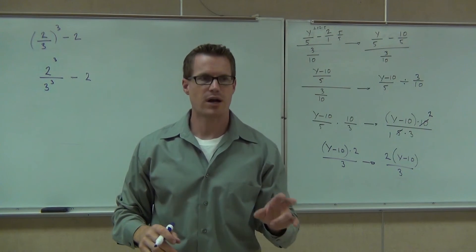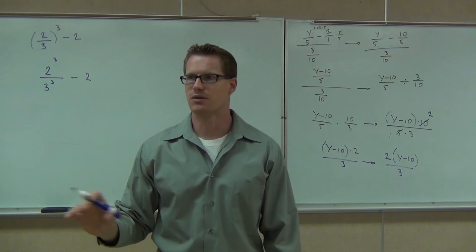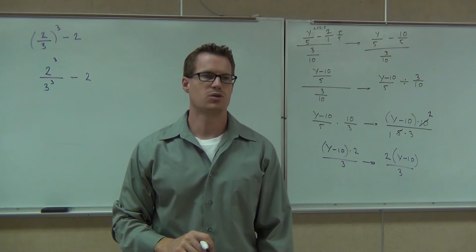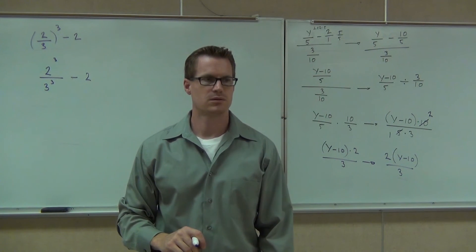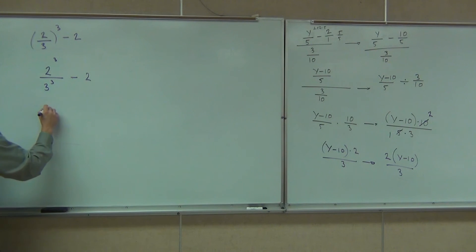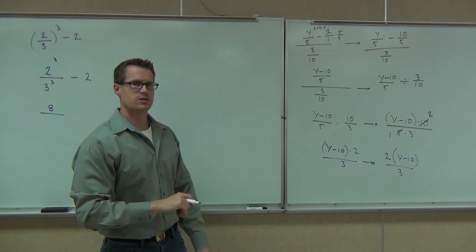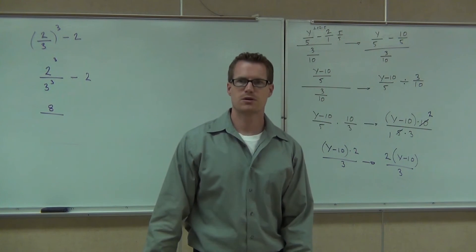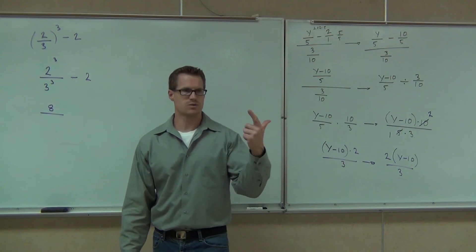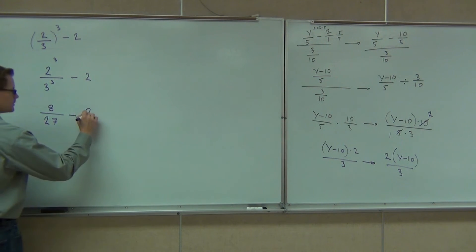Don't shout it out right away, but think about what 2 to the third is. Is it six or eight? Eight — because 2 to the third means 2 times 2 times 2, that's eight. Now three to the third — is it nine or twenty-seven? Twenty-seven — that means 3 times 3 times 3. So we have 8 over 27 minus 2.